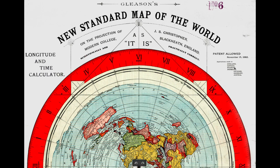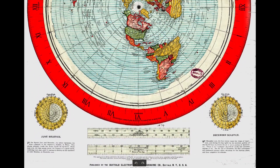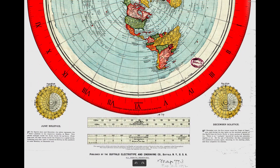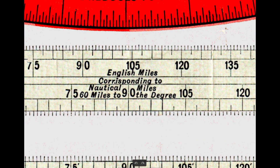Today we're going to measure some distances on the Gleason's map. But first of all, the Gleason's map is a longitude and time calculator — this is very important. It's not meant to measure distances, but we'll get into that. There's another very interesting thing about this Gleason's map: its scale.